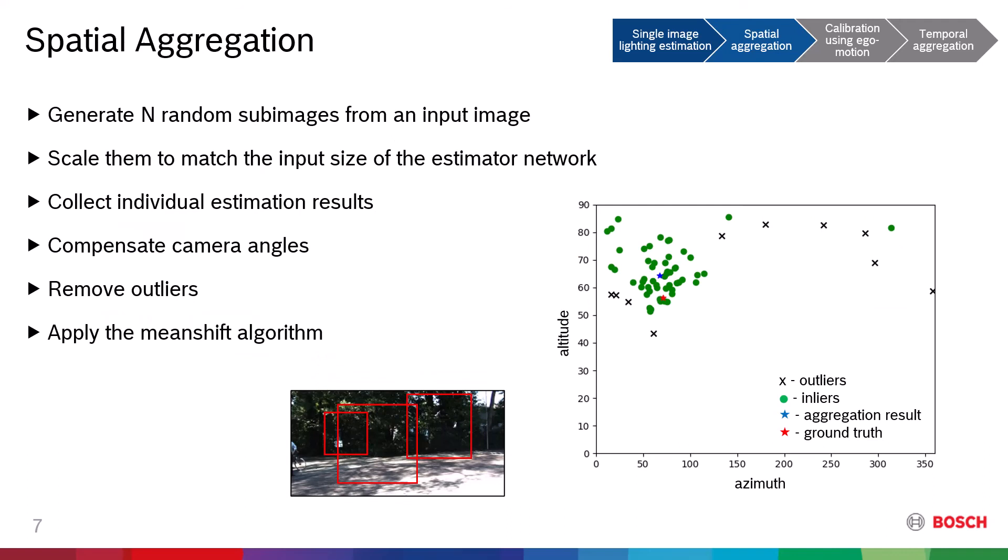To perform the spatial aggregation, we first randomly crop an input image into N sub-images. They are scaled to match the input size of our lighting estimator, and the estimator predicts the lighting directions. Then, we apply an outlier-remover algorithm to remove outliers in the predicted values and run the mean-shift algorithm to find the densest point of the inliers.